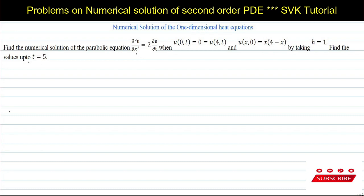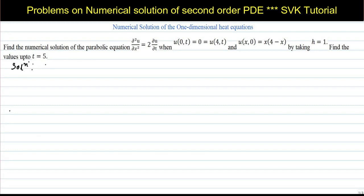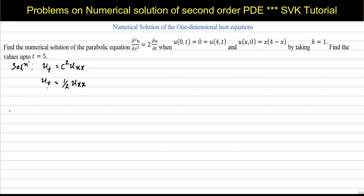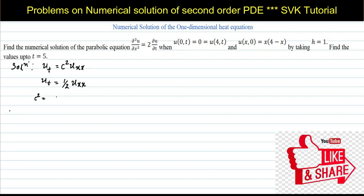We require to find the solution for the given partial differential equation subject to the conditions. As the given PDE is a heat equation, the standard form is u_t = c²·u_xx. Reducing the given problem to standard form, it becomes u_t = (1/2)·u_xx. Equating with the standard form, we find c² = 1/2.